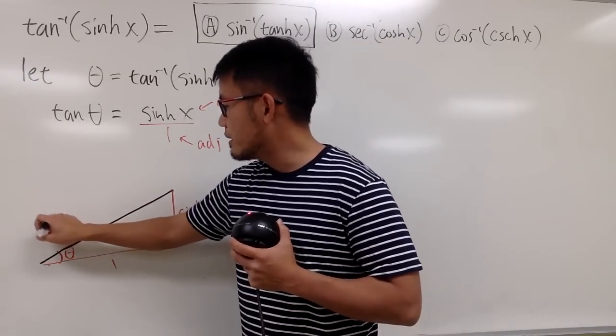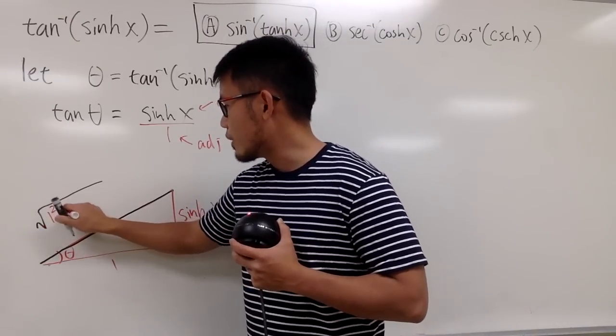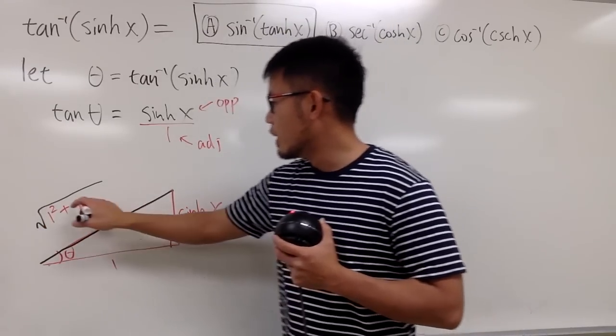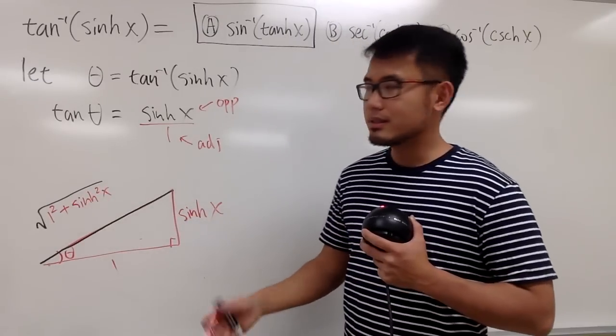And we can just first open the square root. And we do this square, which is just 1 square, plus this square, which is sinh square x. So that's pretty much it.